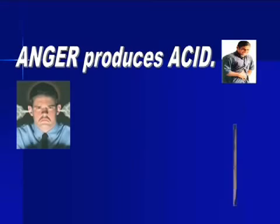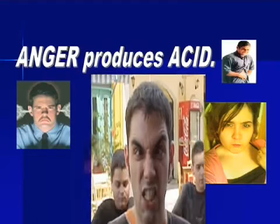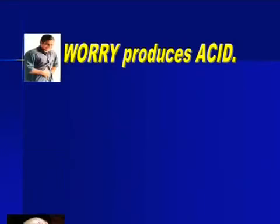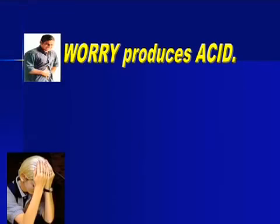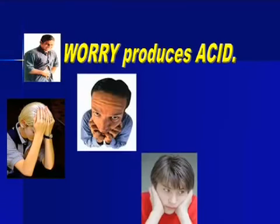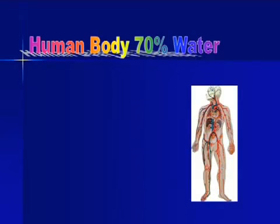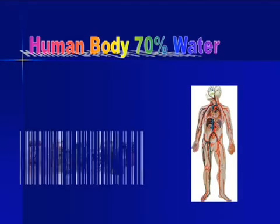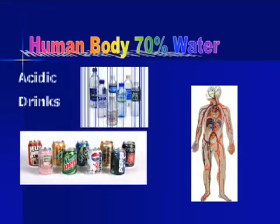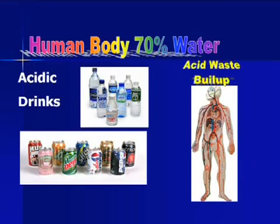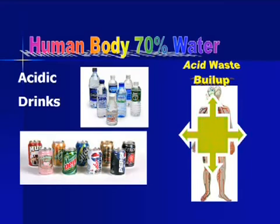You might want to know that anger produces acid in the body, and worrying also produces acid in the body. The human body is more or less 75% water. However, if we continuously consume acidic drinks, we are continually subjecting our body cells to an acidic environment and causing acid waste buildup inside our body.